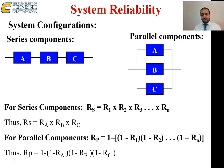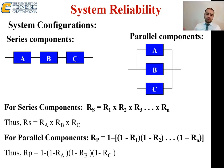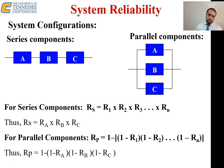Since reliability is a probability, it is a number between zero and one, where zero corresponds to 0% probability and one corresponds to 100% probability. For example, if A = 0.9, B = 0.85, and C = 0.95, then the overall series reliability is R_A × R_B × R_C = 0.9 × 0.85 × 0.95. You continue multiplying as you add components in series.